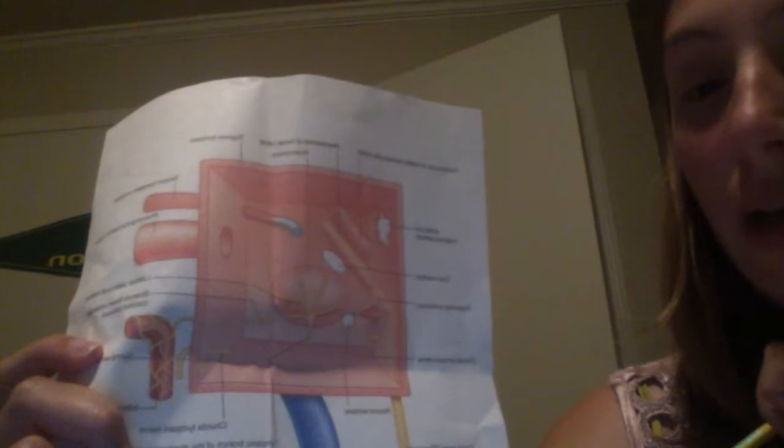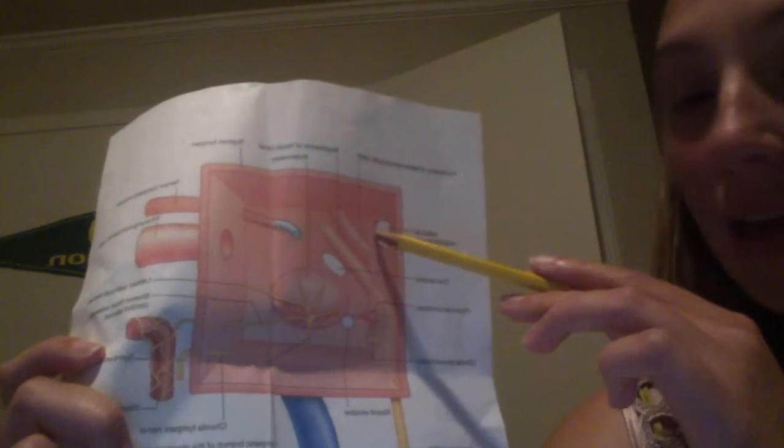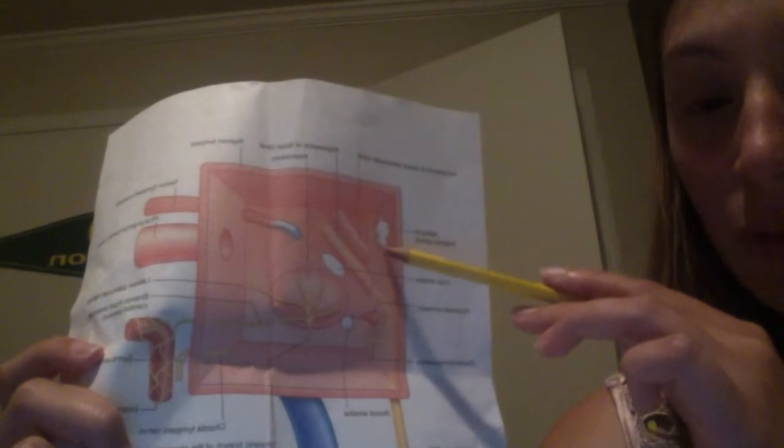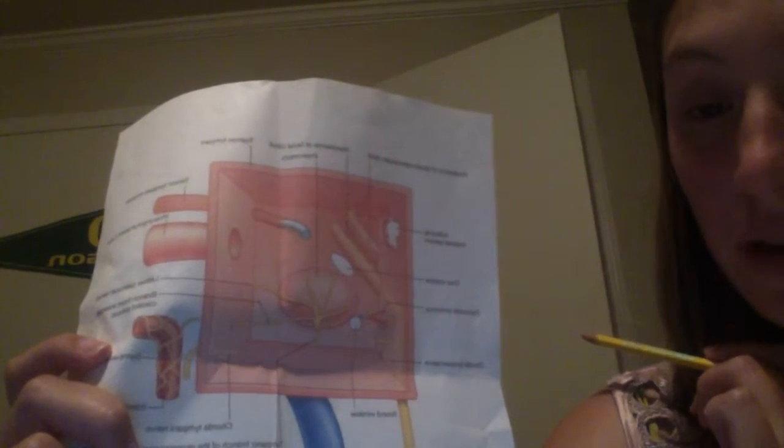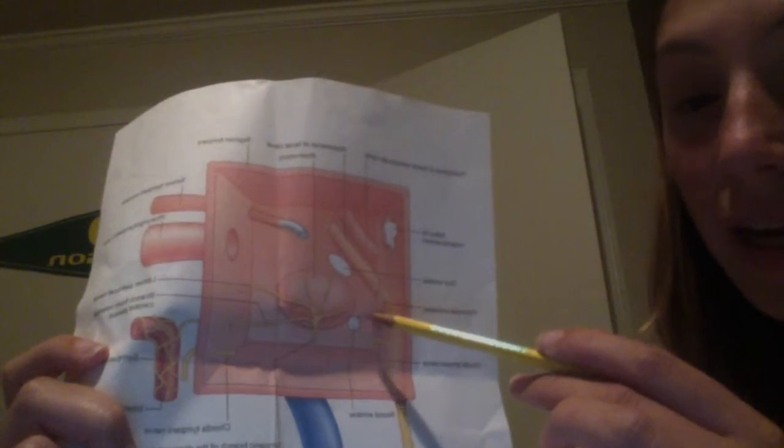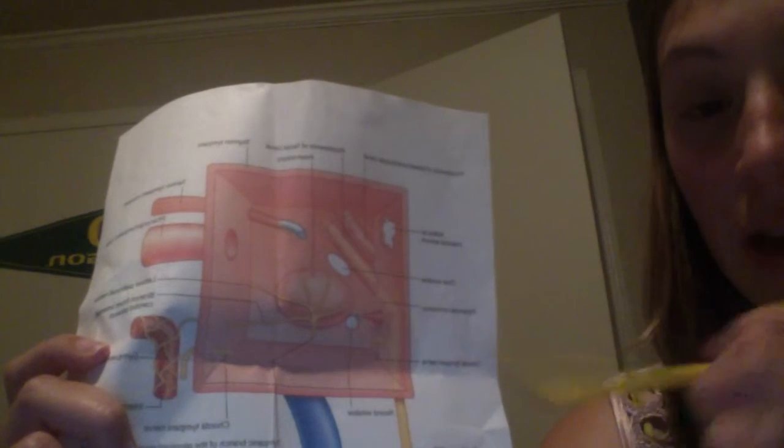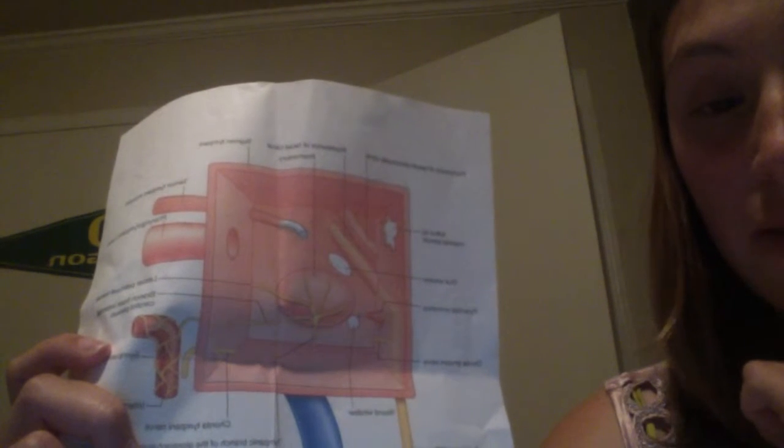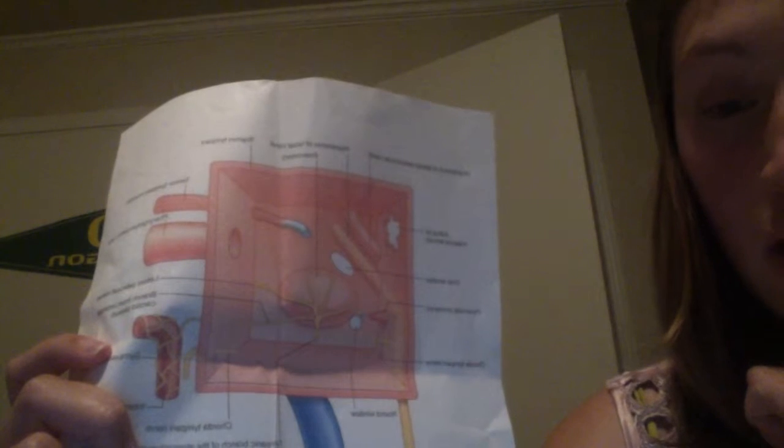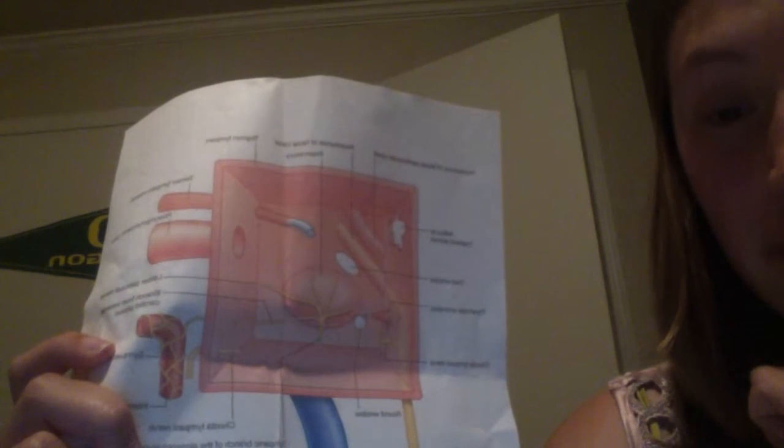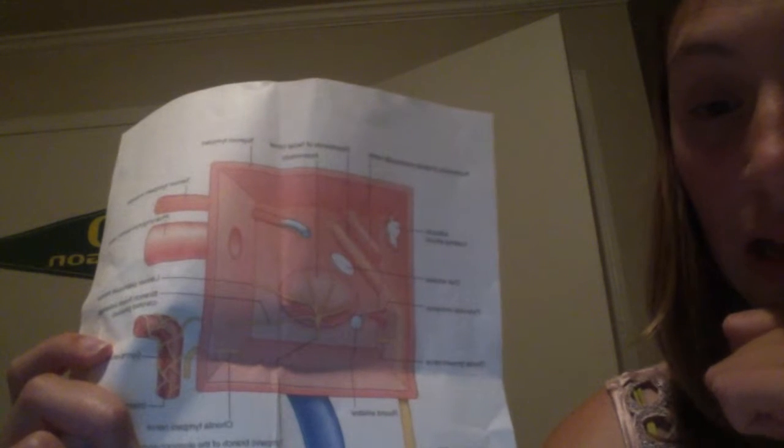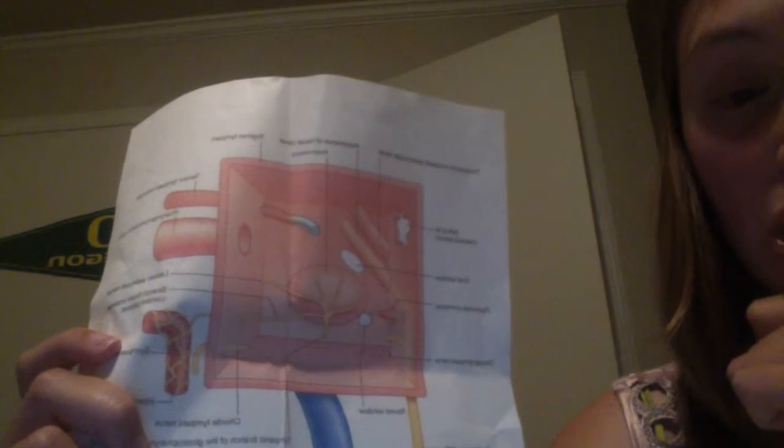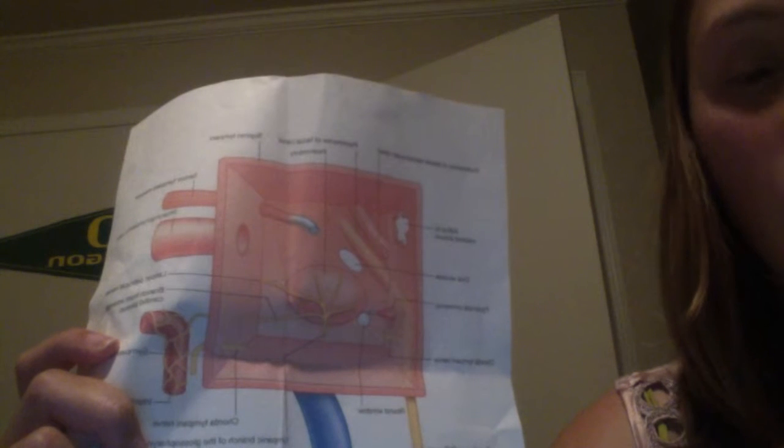On the posterior or mastoid wall, we have the tympanic aditus, which is the entrance to the tympanic antrum. We have the pyramidal eminence, right here, which is behind the oval window near the prominence of the facial cranial nerve. The eminence houses the stapedius muscle. We also have the fossa incudis, and the chorda tympani nerve, which passes through the junction of the posterior and lateral wall.